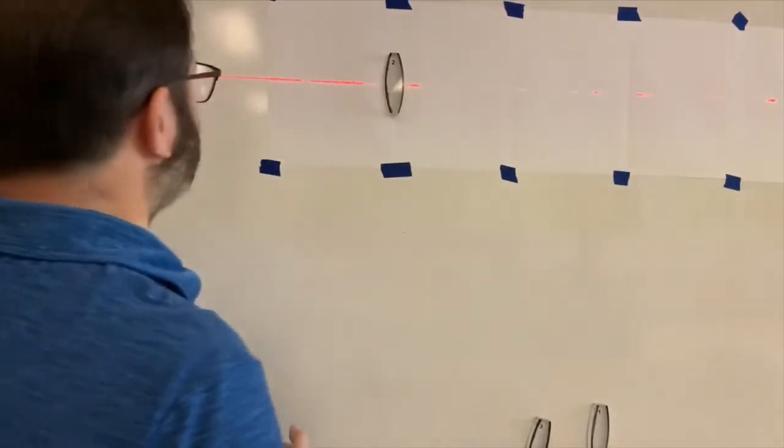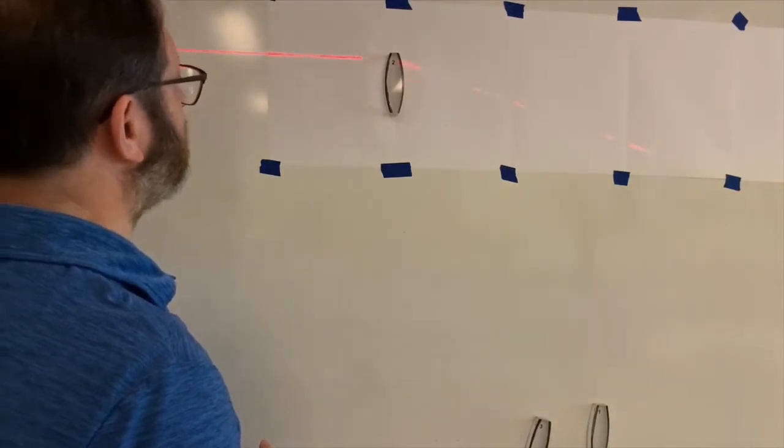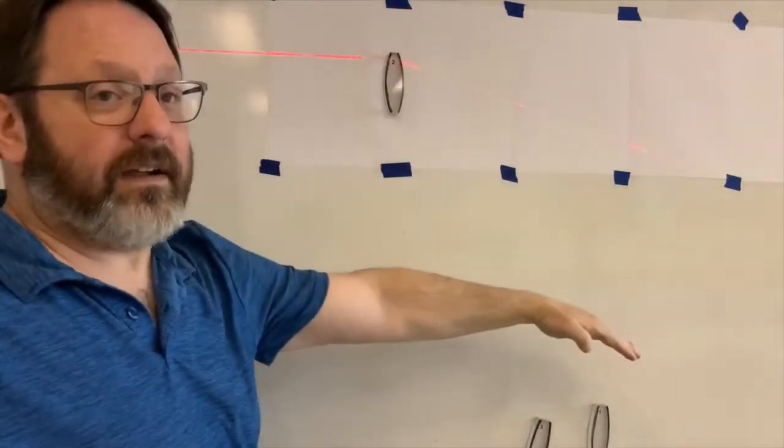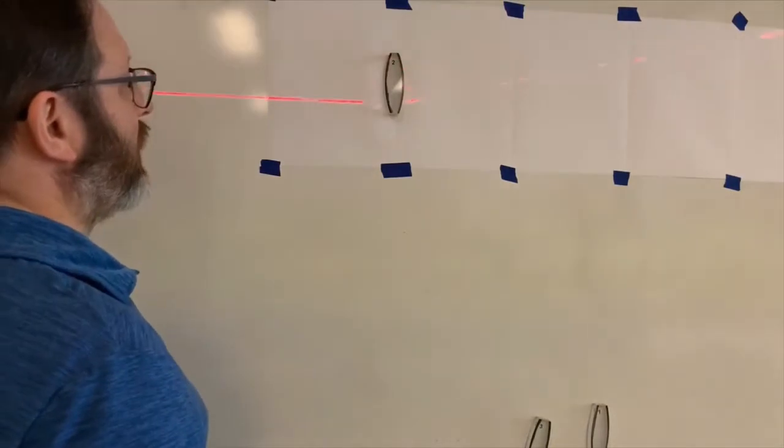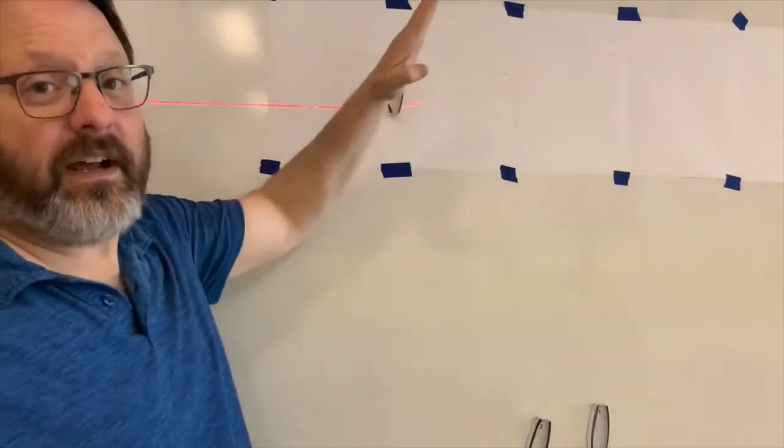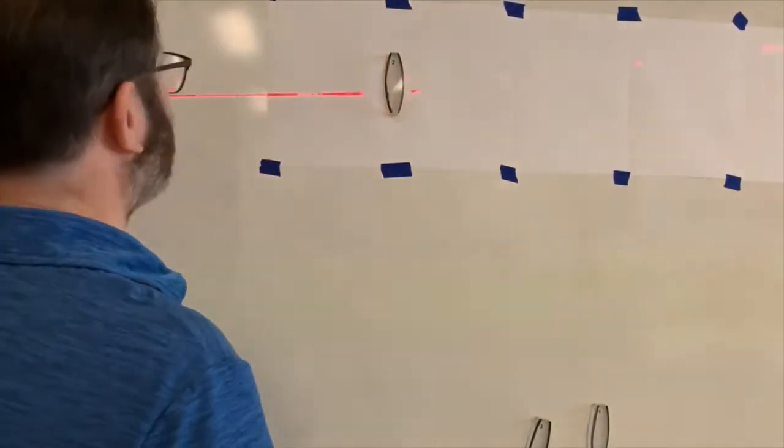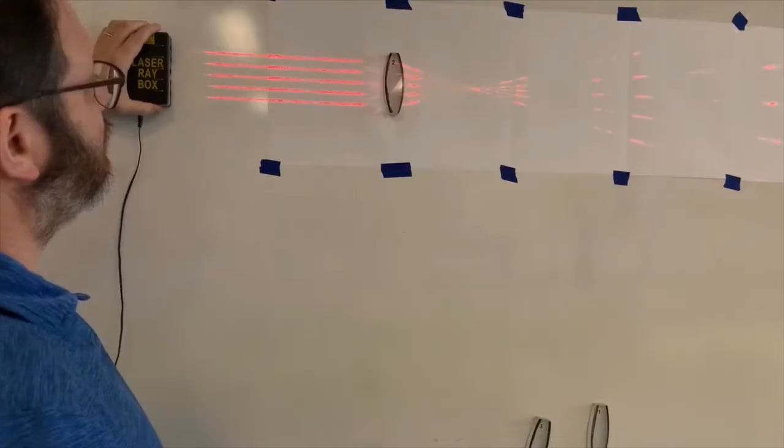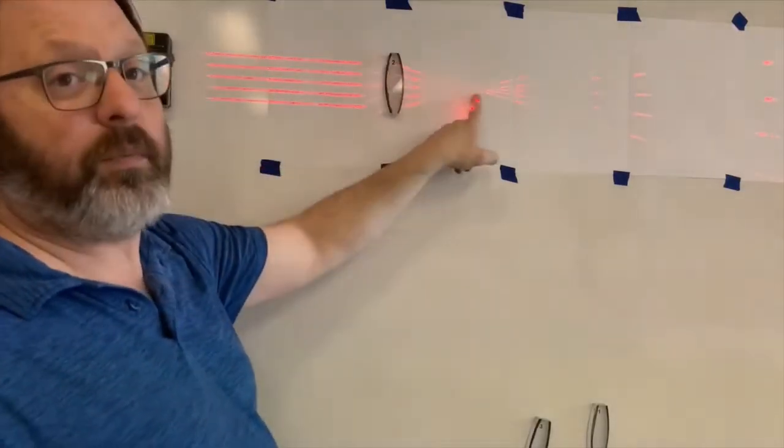But if you come off to the side, so if I go up to the top, it bends the light down. If I go to the bottom, it bends the light up. So just like for the concave mirror, it focuses the light down to a point.